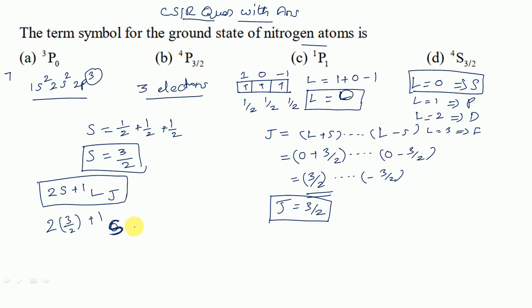And then J is 3/2. So here 2 cancels. 3 plus 1 is 4. 4S 3/2. This is the answer. So the term symbol for the ground state of nitrogen atom is option D, 4S 3/2. This is the answer.